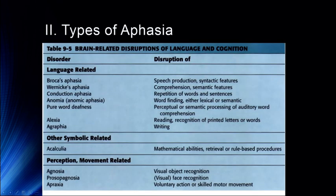We're going to talk primarily about Broca's aphasia, Wernicke's aphasia, conduction aphasia, anomia, pure word deafness, alexia, and agraphia. Alexia is often referred to as pure word blindness, and anomia is a loss of word finding. Acalculia we won't talk much about, but it is also symbolically related and involves a loss of mathematical abilities. We've already talked about agnosia and prosopagnosia.